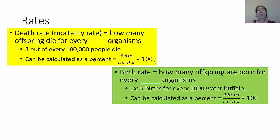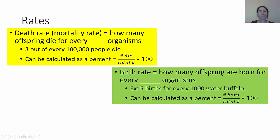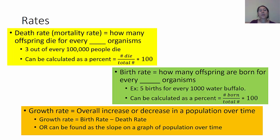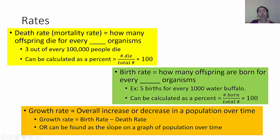You can also calculate a birth rate for how many organisms are born for every X number of organisms — for example, five births for every 1,000 water buffalo. You can also calculate that as a percent. The last one is the growth rate, which is the overall increase or decrease in a population over time. You can calculate a simple growth rate by saying: birth rate minus death rate.